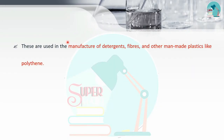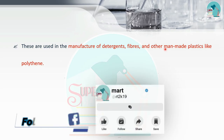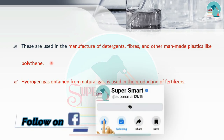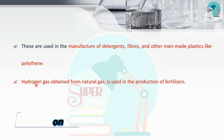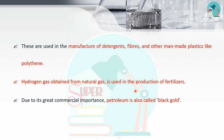From petroleum refining, we can manufacture detergents, fibers, and plastics. Natural gas and hydrogen gas are used in fertilizer production. Petroleum gives us many commercial products and is known as black gold.